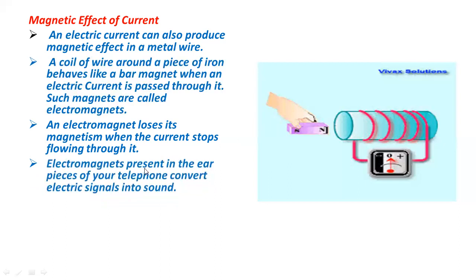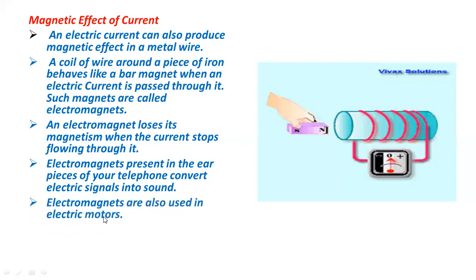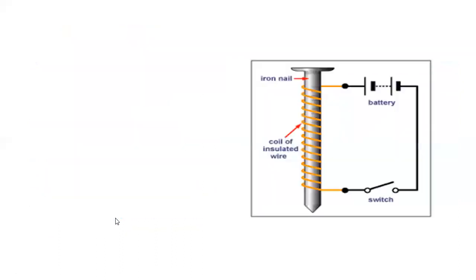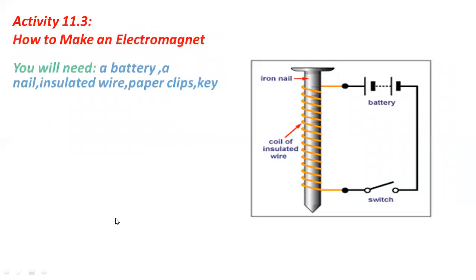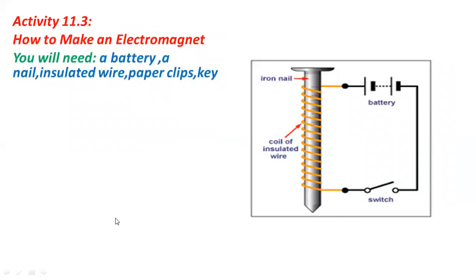Electromagnets present in the earpiece of your telephone convert electrical signals into sound. Electromagnets are also used in electric motors. To understand how to make an electromagnet, you will need a battery, a nail, insulated wire, a paper clip, and a key.